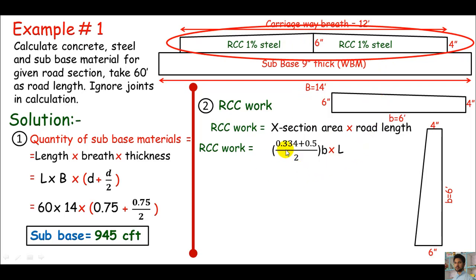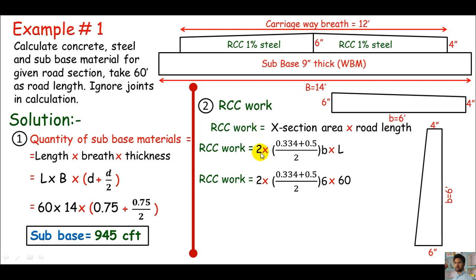I'll put the values. The RCC work will be 2 times the average of top and bottom, which is (4+6)/2 = 0.334 + 0.5, times breadth 6 feet, times length 60. Calculating this gives RCC work equals 300.25 CFT. This was our second approach.